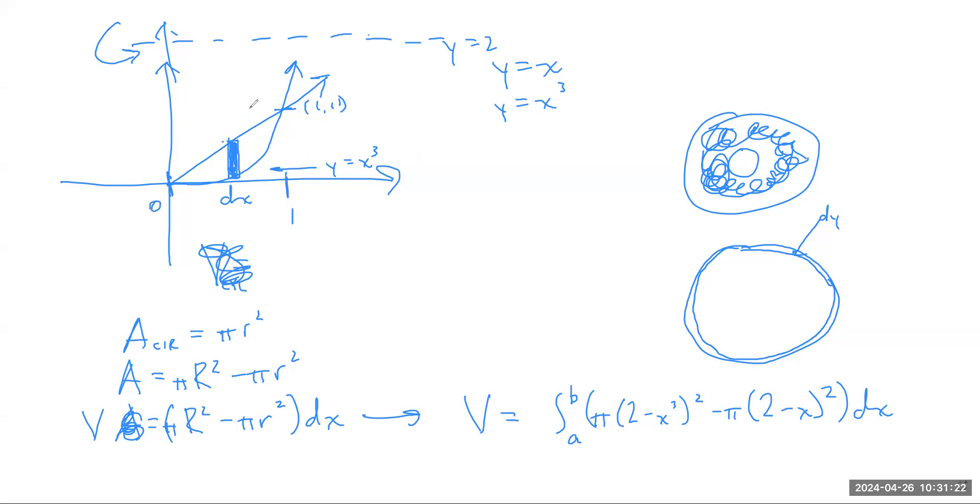Why are we doing 2 minus x cubed and not x cubed minus 2? So on the interval we care about, from 0 to 1, which is bigger, y equals 2 or y equals x cubed? So this is a geometric thing. We're trying to measure a volume. Really is only meaningful if all the lengths that go into that volume are positive. So I want to subtract the biggest thing. So the bigger value minus the smaller value.